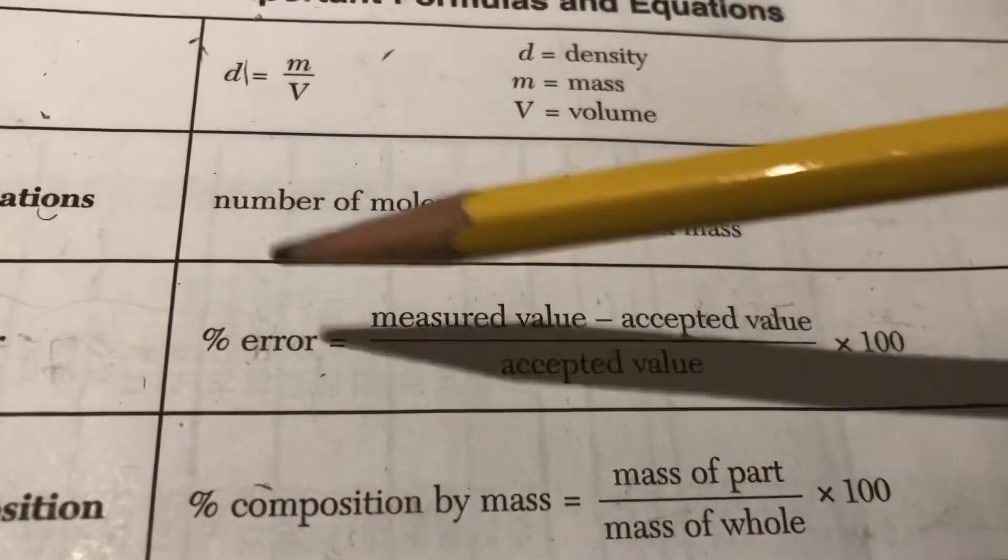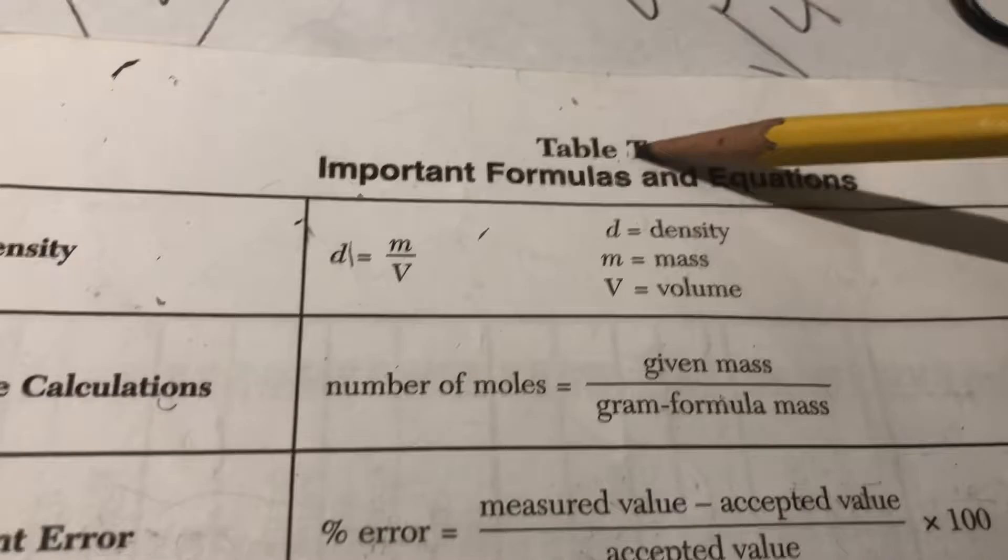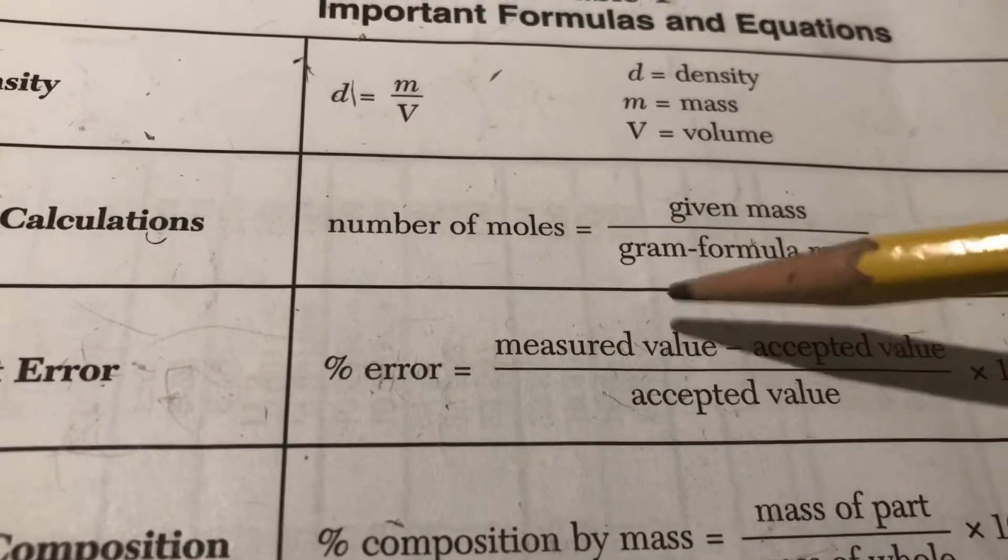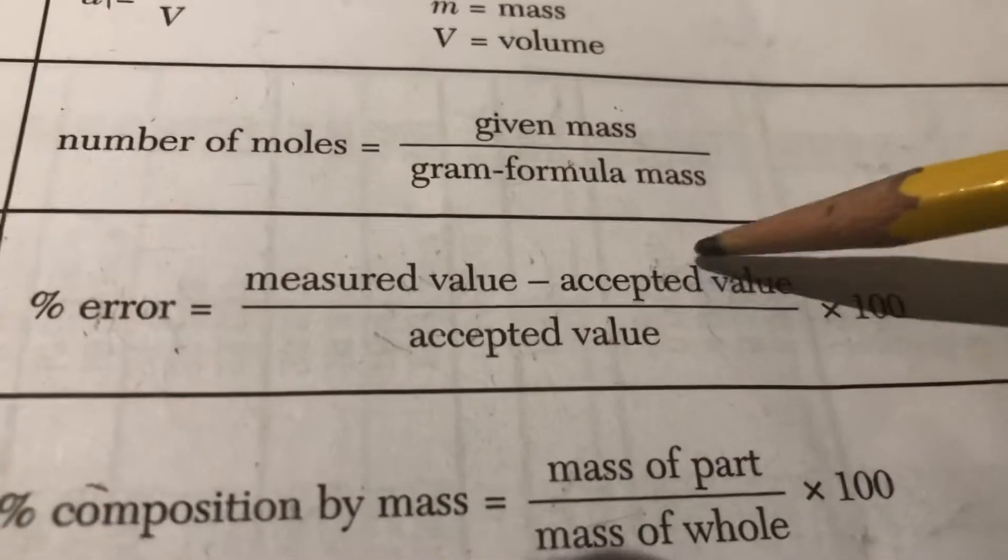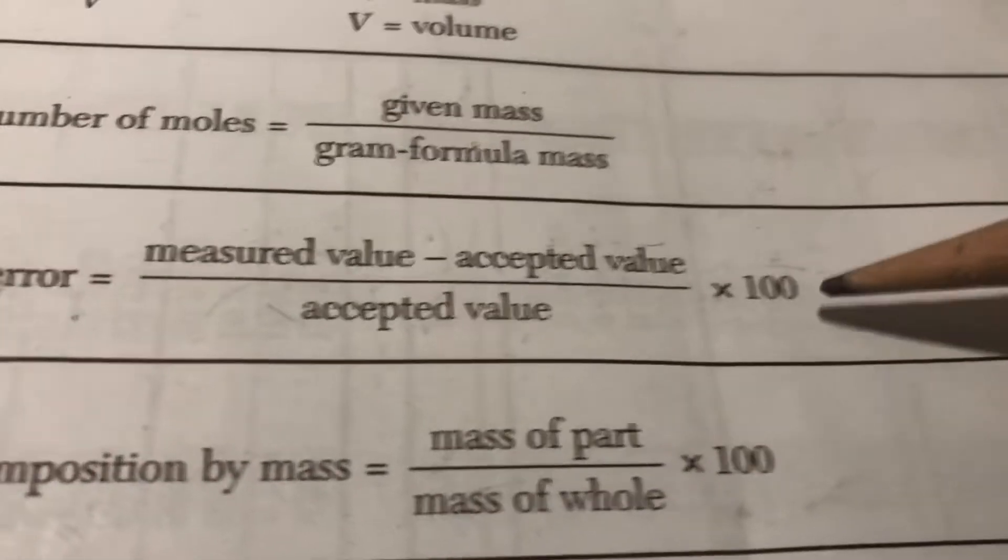Now, percent error has a formula that goes with it. It's found on your reference tables, table T, so you don't have to hurt your heads memorizing it. So it's going to be percent error equals the measured value minus the accepted value over the accepted value again times 100.